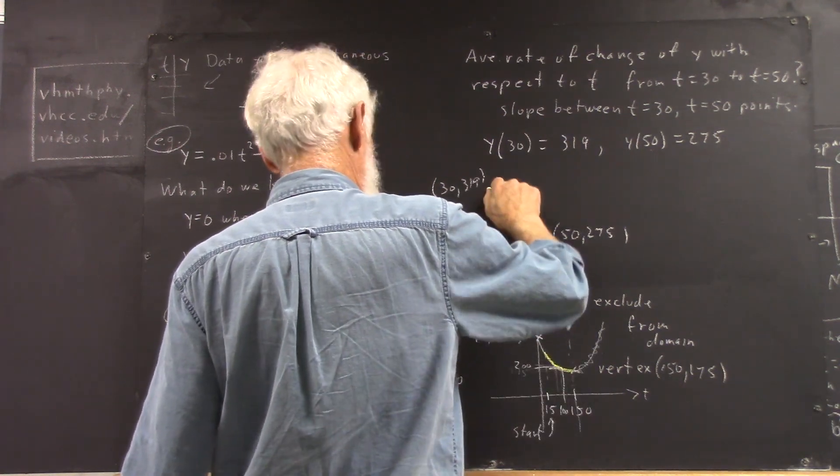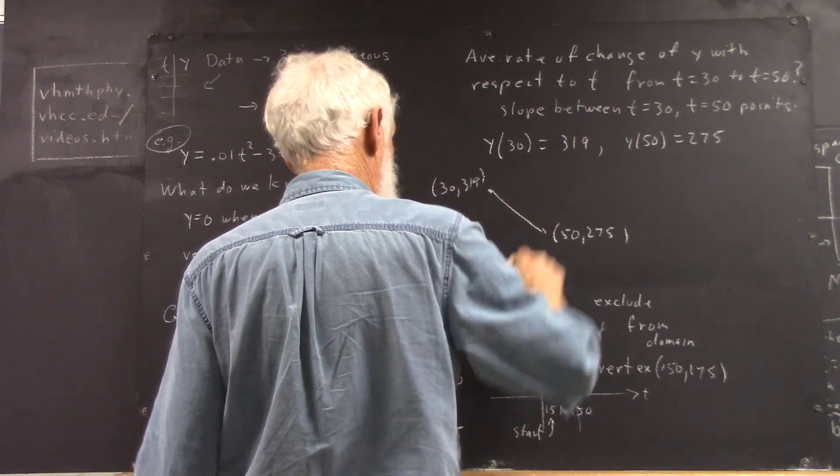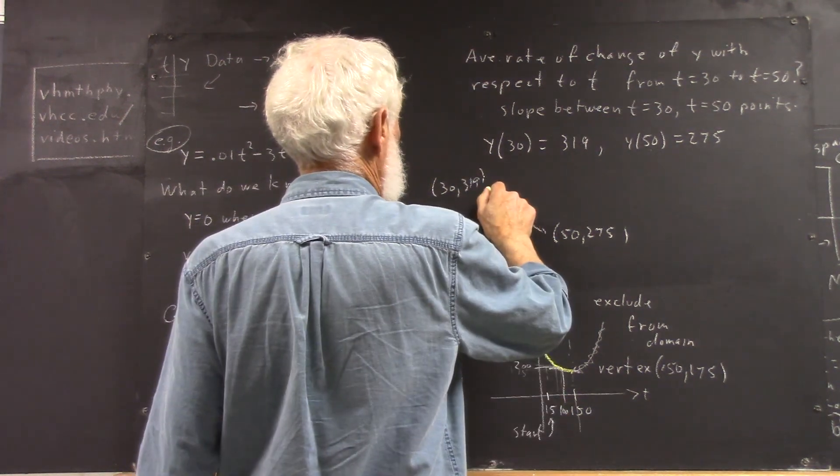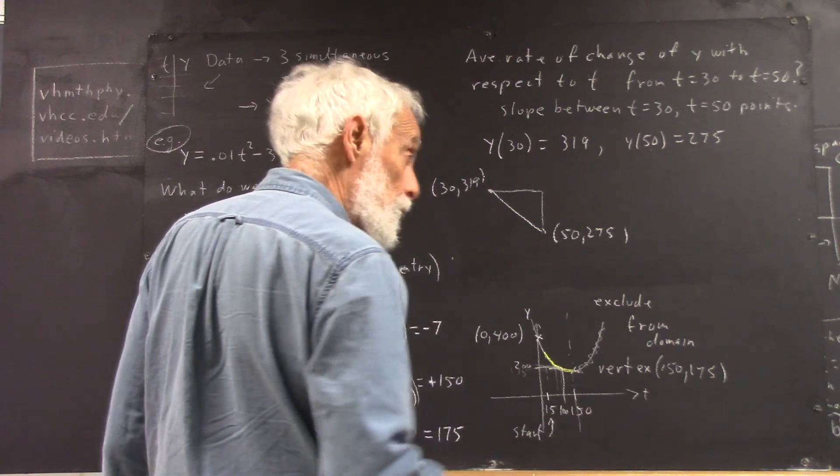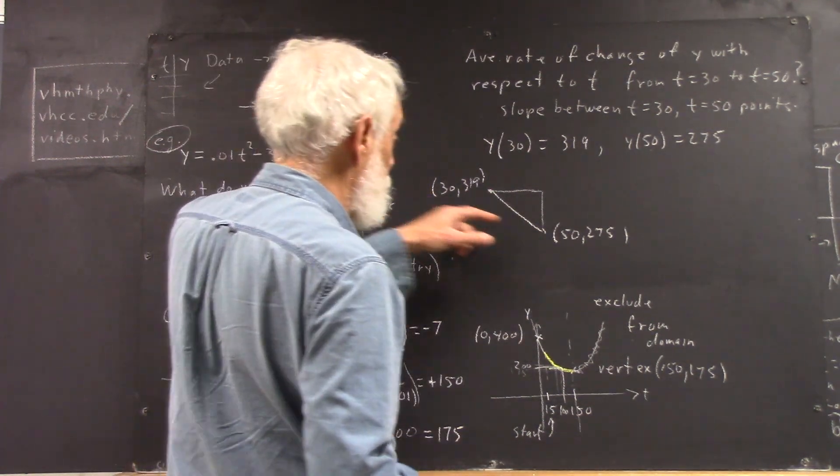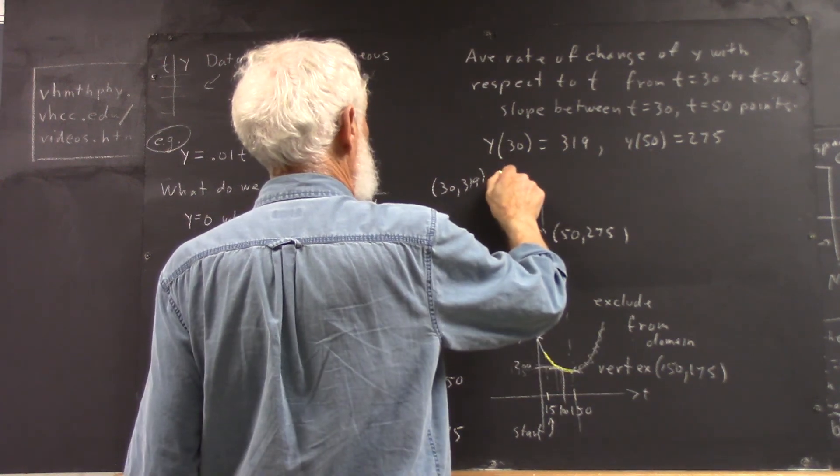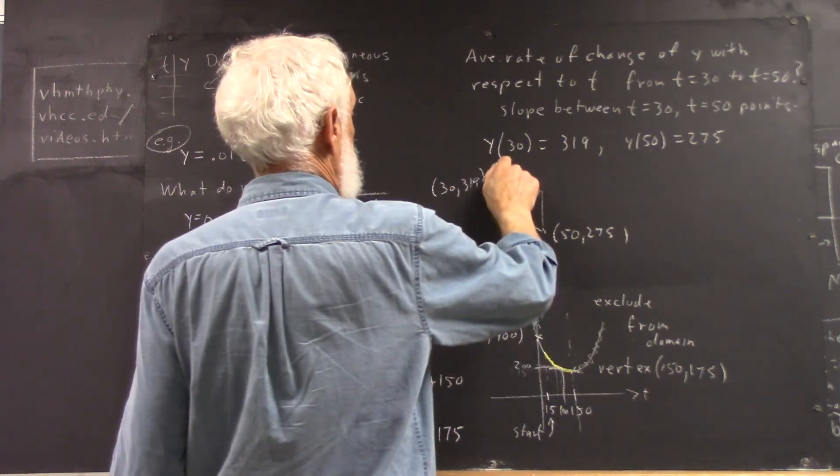And we find the slope of the line segment connecting these points, and that's going to be the rate of change. We can calculate the rise and the run. Okay, the run from 30 to 50 is 20. That's 50 minus 30. So there's our run.